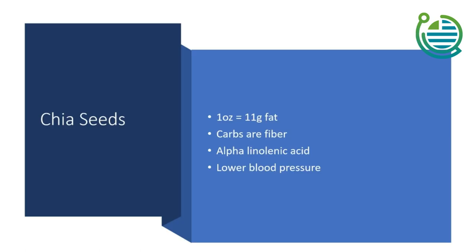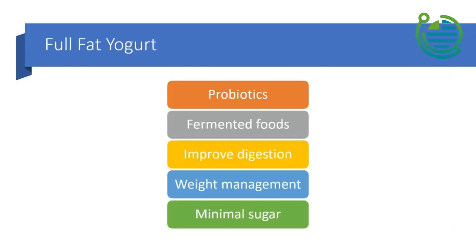Chia seeds are another good consideration because they have so many carbs on their fiber. They have alpha-linolenic acid which protects the liver and protects the cells. Full-fat yogurt is a fermented food with probiotics, improves digestion, weight management, and has minimal sugar intake. In our next section, we're going to talk about how to sleep better. This is America's Healer with Dr. Jason West, and we're going to see you guys in segment 2.